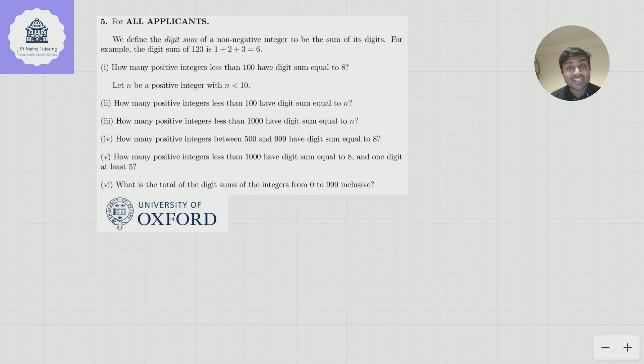Part 1: How many positive integers less than 100 have a digit sum equal to 8? Let n be a positive integer with n less than 10. Part 2: How many positive integers less than 100 have digit sum equal to n? Part 3: How many positive integers less than 1,000 have digit sum equal to n?